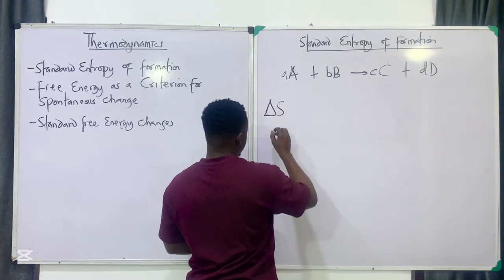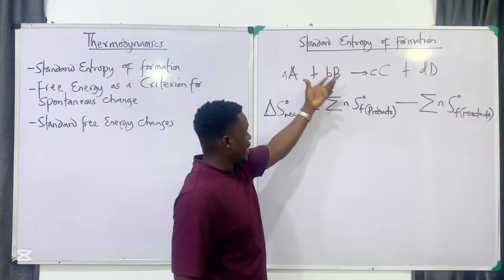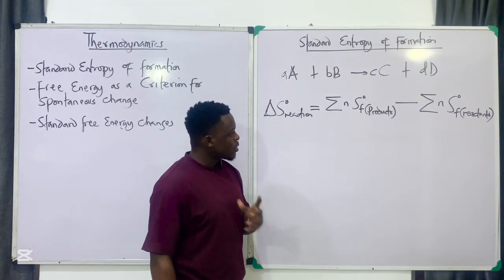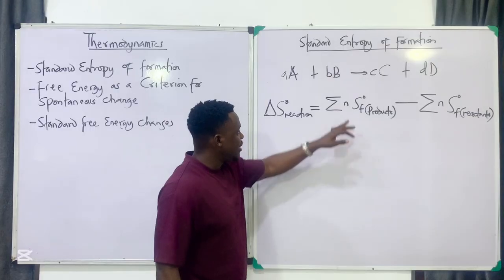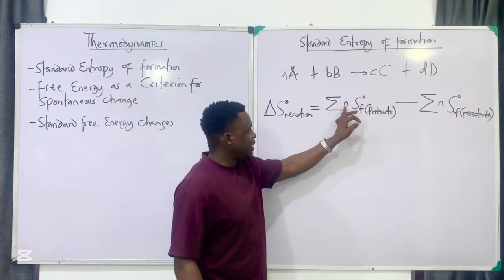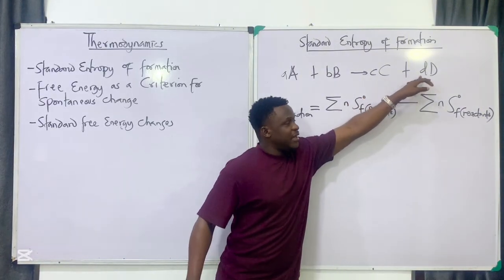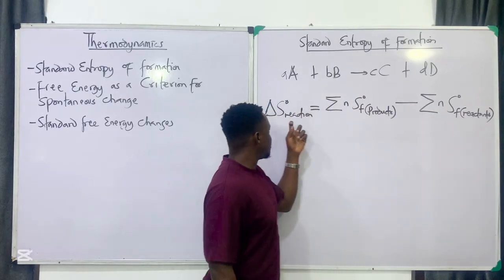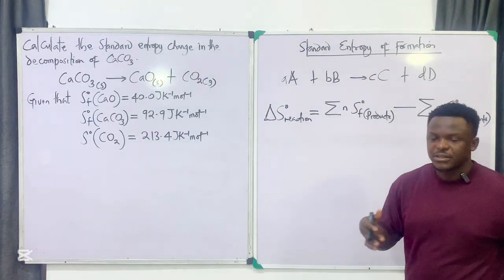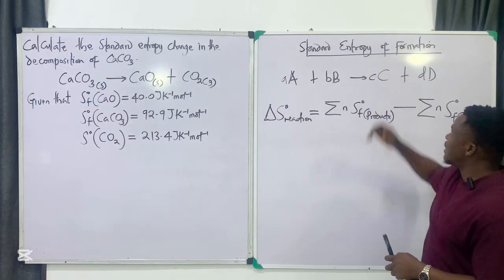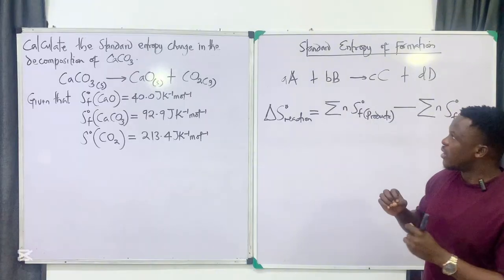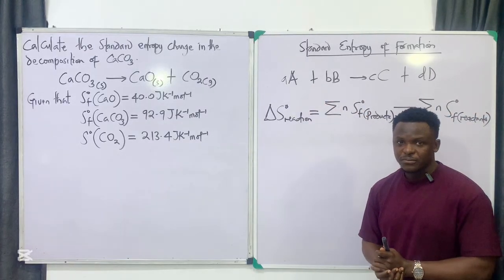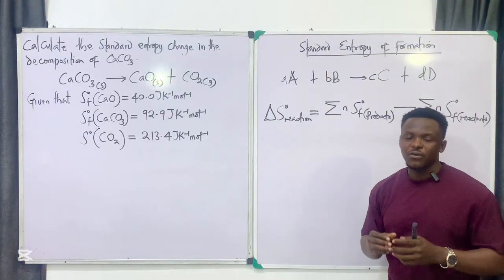The formula for the entropy change ΔS of a reaction is: when given individual entropies of formation for each species, you can solve for the entropy of the reaction by taking the summation of the entropy of formation of the products — where n is the stoichiometric coefficient — minus the summation of that of the reactants. The application is that you use the standard entropy of formation of individual species to solve for the entropy change of the reaction.